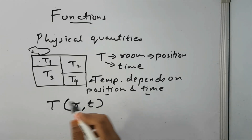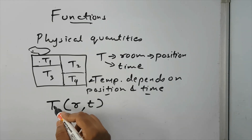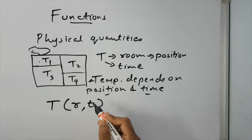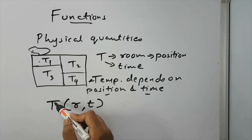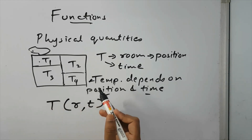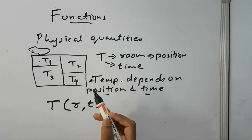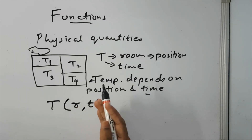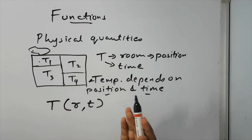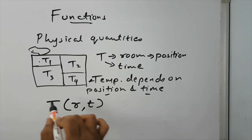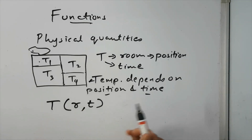And capital T is temperature. So we say: temperature is a function of position and time. This is basically what functions are. We study in how many different ways one physical quantity can depend on other physical quantities.